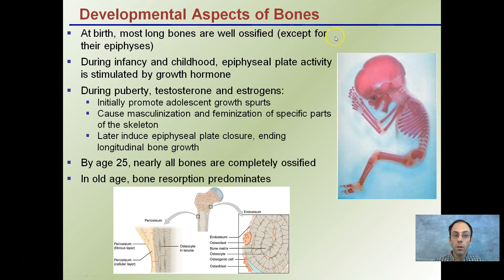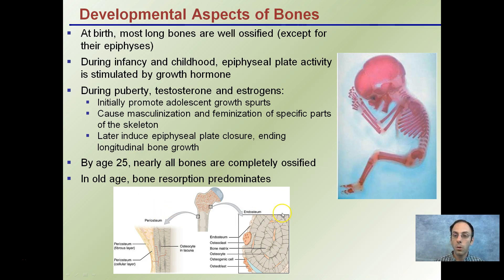At birth, most long bones are well ossified. During infancy and childhood, epiphyseal plate activity is stimulated by growth hormone. During puberty, testosterone and estrogens promote adolescent growth spurts and cause bones to continually develop and ossify. By age 25, nearly all bones are completely ossified. In old age, bone reabsorption predominates — that breakdown of bone can outpace the rate at which bones are rebuilt.